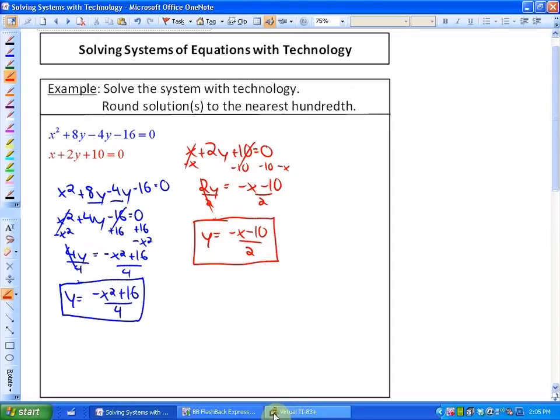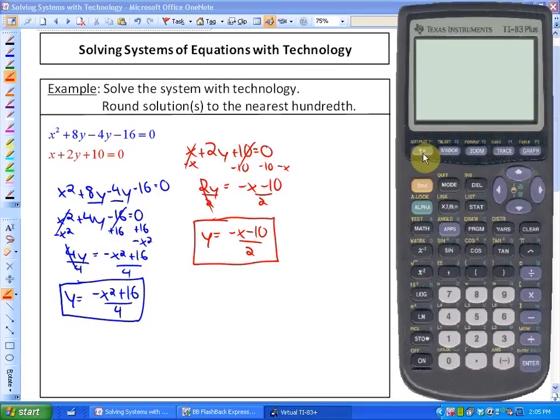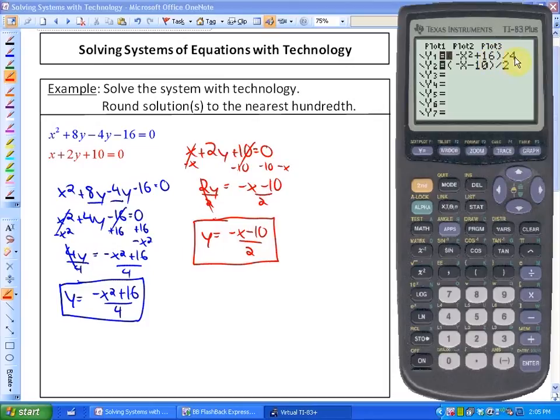Now we go into the y equals screen. You'll see I've already put these in: negative x squared plus 16 all over 4, and negative x minus 10 over 2. Make sure your numerator is in brackets, otherwise your calculator gets confused about its order of operations.